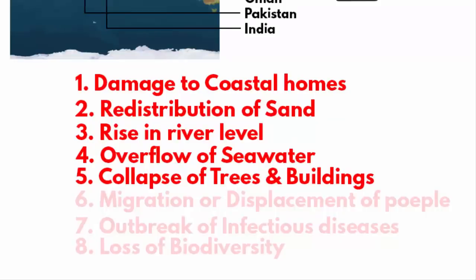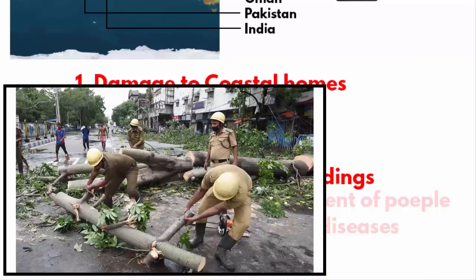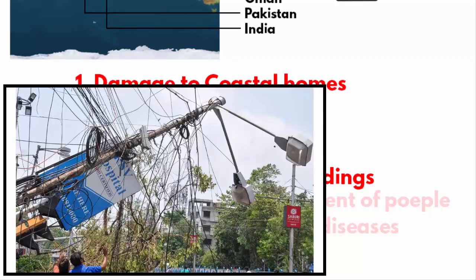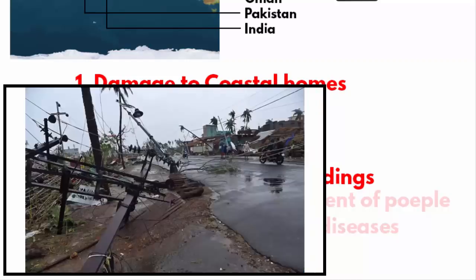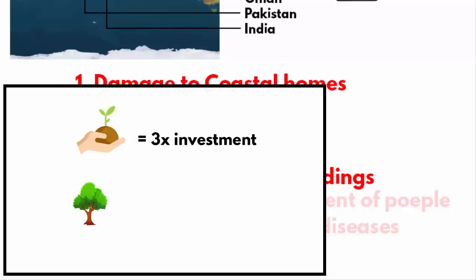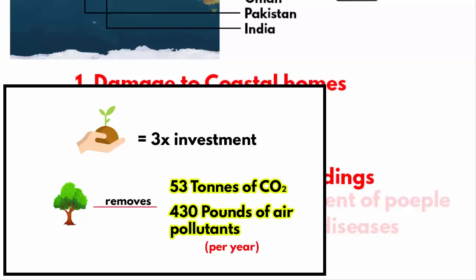The fifth impact is the collapse of trees and buildings. Uprooting of trees may cause death and injury to human beings and animals. It blocks roads and disrupts transportation. Falling trees also snap electric wires, cutting the supply of electricity and communication. Trees are valuable growing assets worth about 3 times the investment. According to a study, 100 trees remove 53 tons of carbon dioxide and 430 pounds of other air pollutants per year, giving both direct and indirect economic benefits.